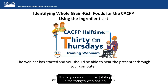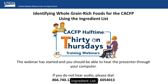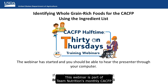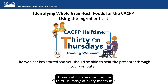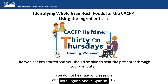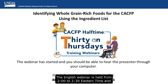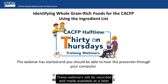Thank you so much for joining us for today's webinar on identifying whole-grain rich foods for the CACFP using the ingredient list. This webinar is part of Team Nutrition's monthly CACFP Halftime Thursdays webinar series. These webinars are held on the third Thursday of every month in both English and in Spanish. The English webinar is held from 2 to 2:30 Eastern Time, and the Spanish webinar is held from 3 to 3:30 Eastern Time. These webinars will be recorded and made available at a later date on the Team Nutrition website.